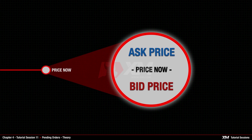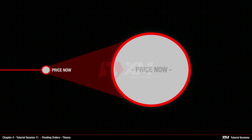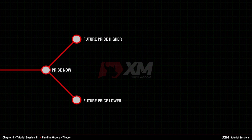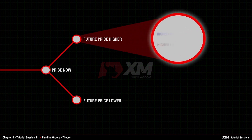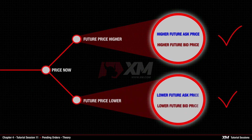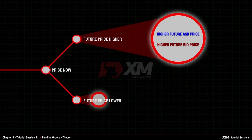If you decide to open an order now, you will need to choose only between two options: Buy or Sell. As we mentioned before, the pending order is set at the Future price, not at the Price Now. So we have two possibilities — the Future price will be either higher or lower than the Price Now. For both higher and lower future price, you can place two order types, Buy or Sell, and they both need to be set according to the Ask and the Bid prices.